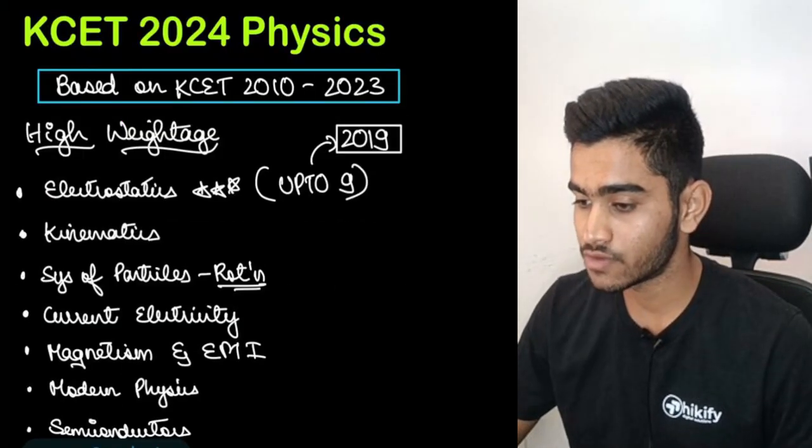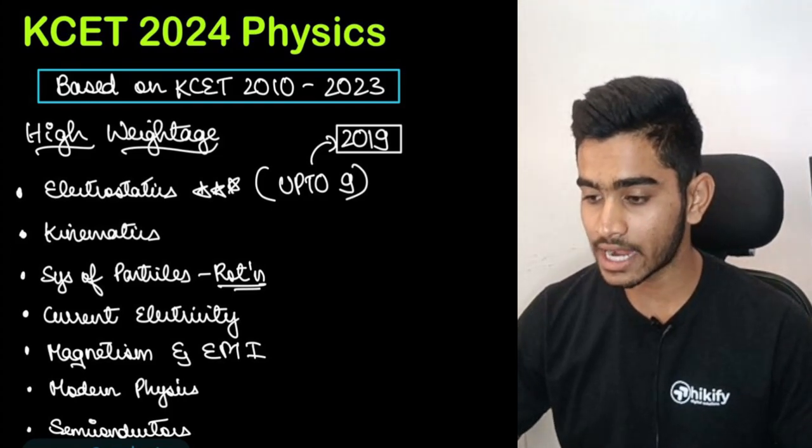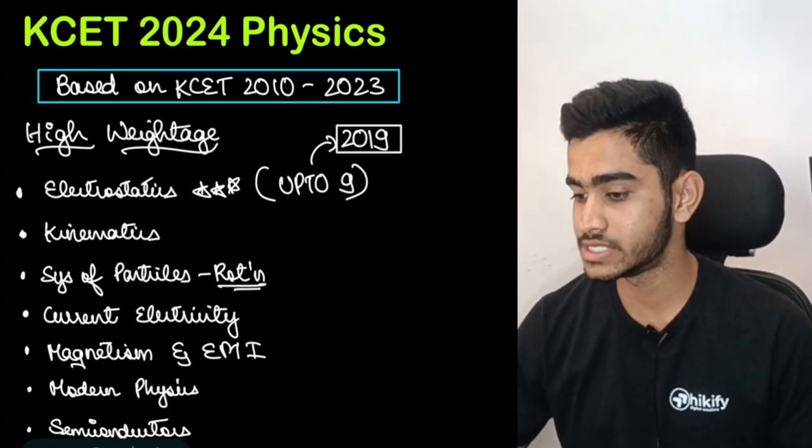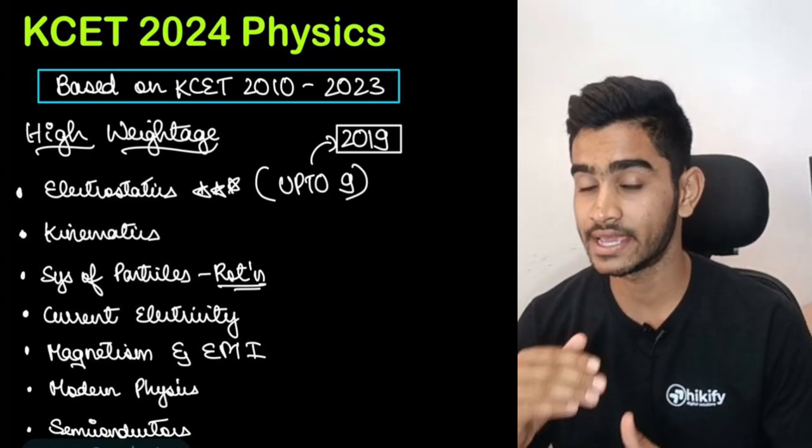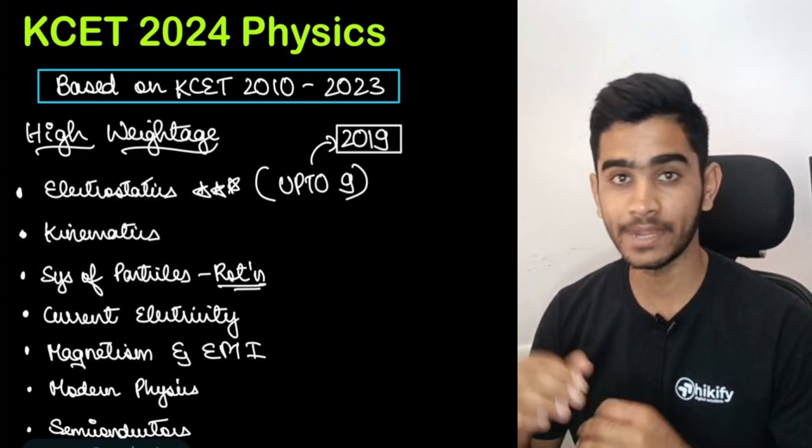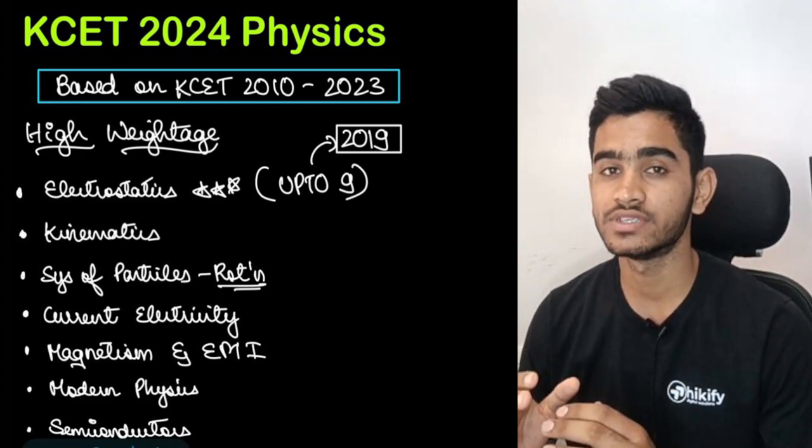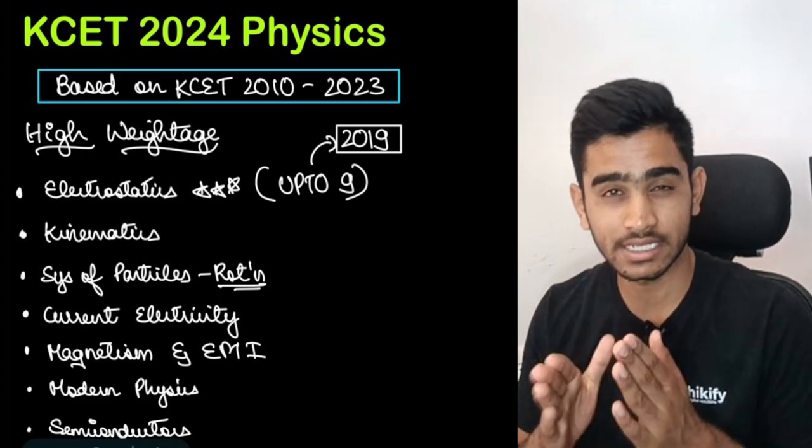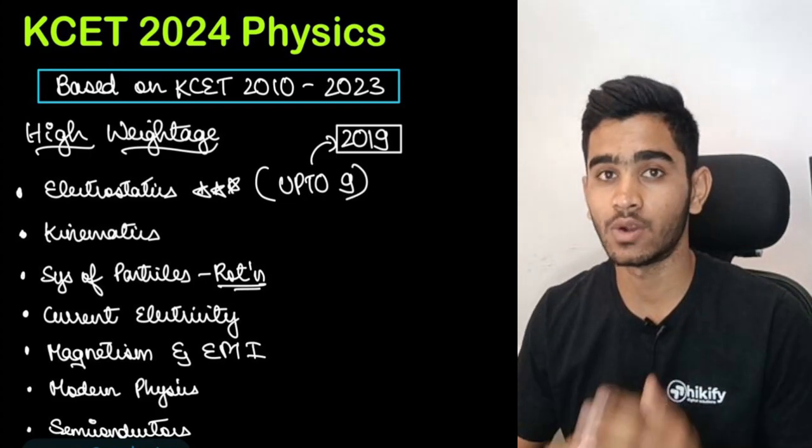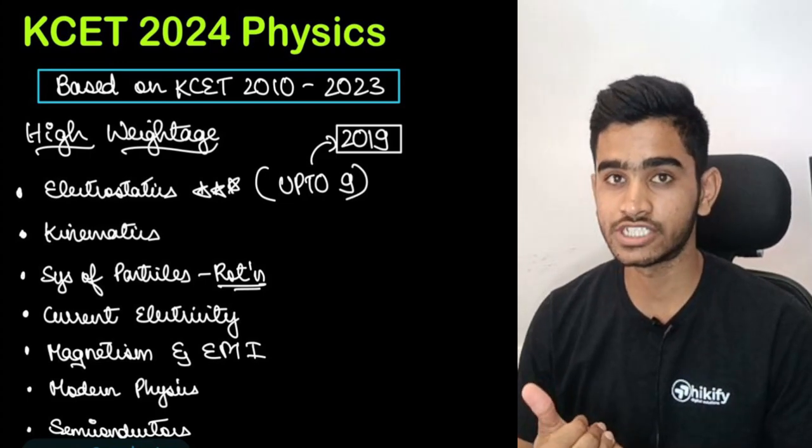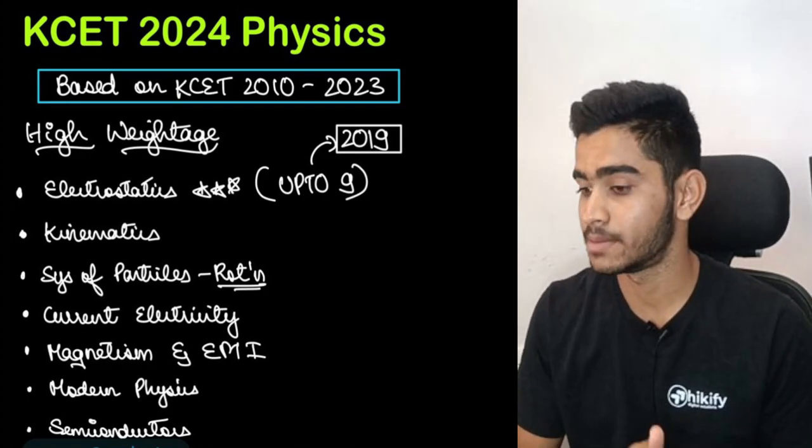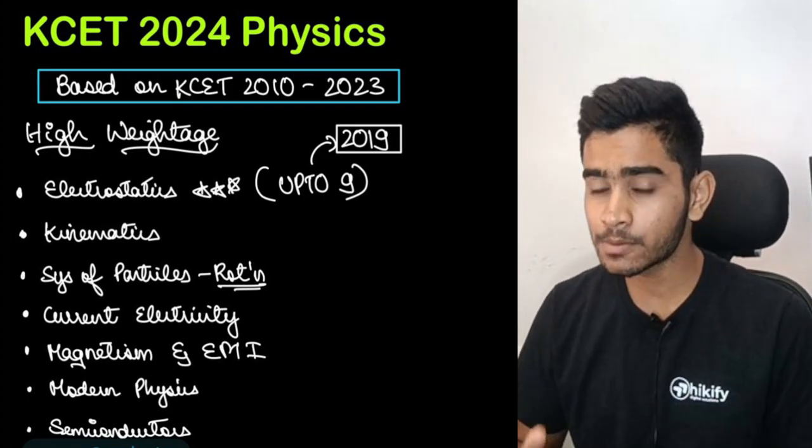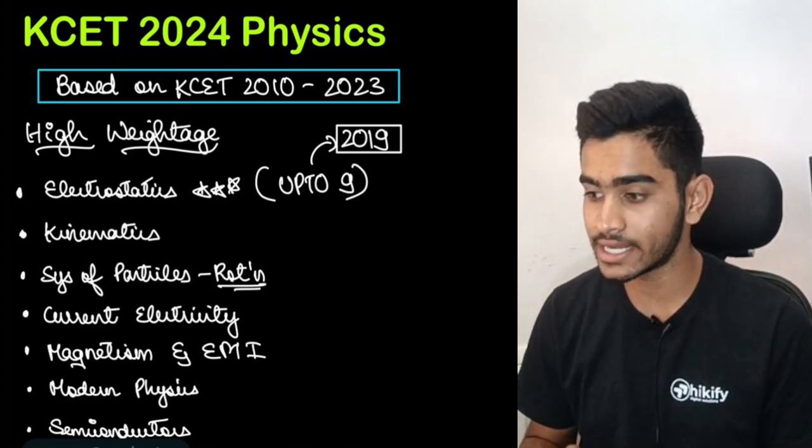Going through the high weightage chapters in your physics part, first and foremost chapter when it comes to your physics which you should keep in mind when particularly when you are studying for exams like KCET is electrostatics. I have been telling this in all my videos regarding physics that electrostatics is certainly the most important chapter out there when we go through the weightage which electrostatics has got in the previous years KCET examination.